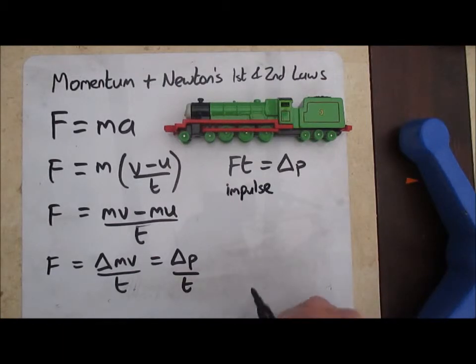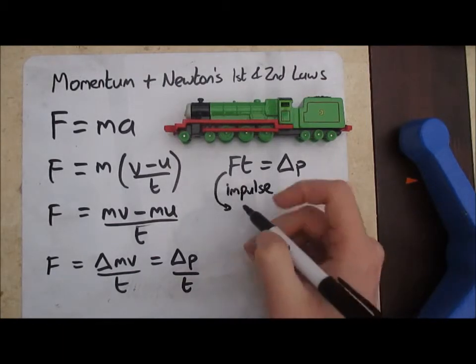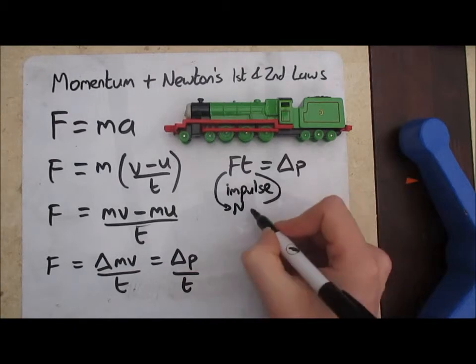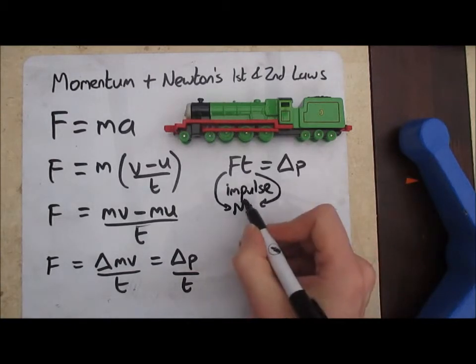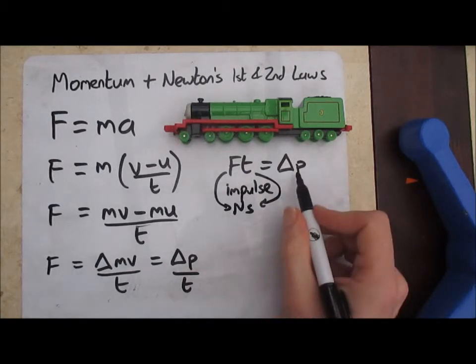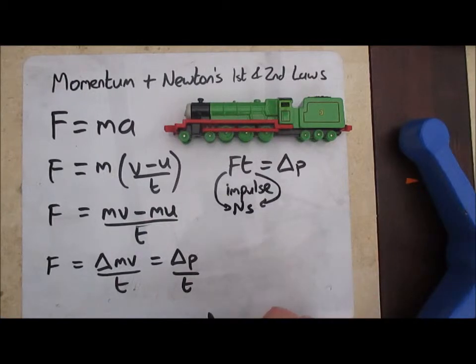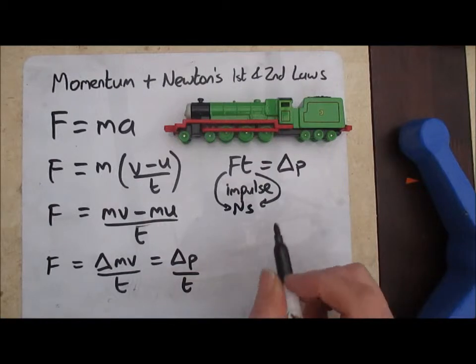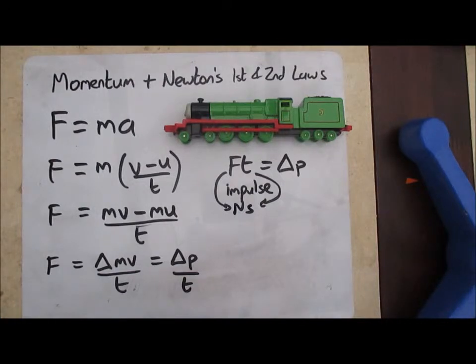And if we look at the units for that, force measured in newtons, time measured in seconds, we actually have a new unit for momentum here: newton seconds. So kilogram meters per second and newton seconds dimensionally are the same thing, so momentum can be measured in either of those units as we work through.